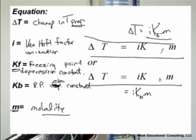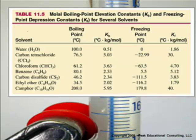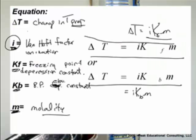K_F and K_B are numbers that you look up on a table — molality we've learned about. The K values are different for different solvents: water has a number, benzene has a number, they're all different. i is the ionization factor constant — actually, let's do a little thing about i.